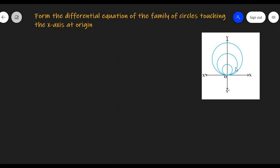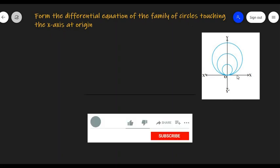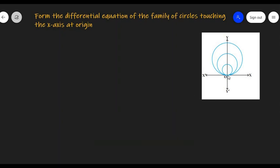If you make the diagram, it will look like this. This is the x-axis, the y-axis, O represents the origin, and if the circles touch the origin at x-axis, it will look like this.